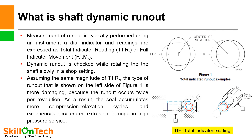Shaft dynamic runout. Measurement of runout is typically performed using a dial indicator, and readings are expressed as Total Indicator Reading (TIR) or Full Indicator Movement. A dial indicator has 1 mm of movement in a circle divided into 100 divisions, so one division equals 1/100 mm. Here in this slide you can see Total Indicator Runout examples. TIR is a deviation that will be shown on the dial gauge.